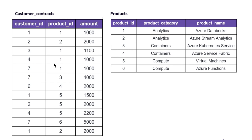We need customers who purchased at least one product from each category. For customer ID 1: they purchased product ID 1 (Analytics category) and product ID 5 (Compute category), and product ID 2 (also Analytics). Customer ID 1 has not purchased any product from the Containers category, so this customer cannot be in our output.